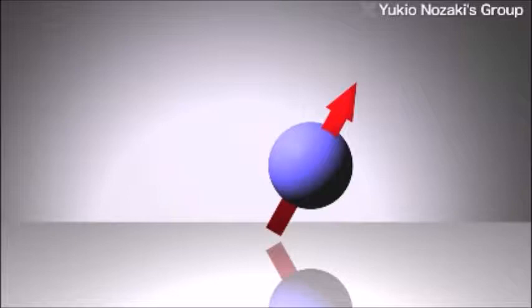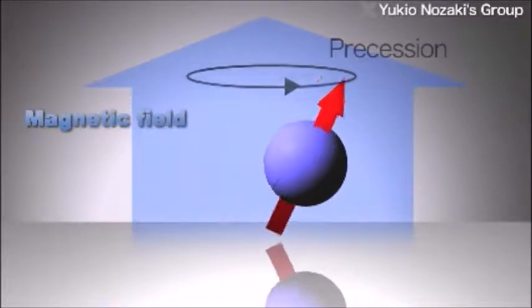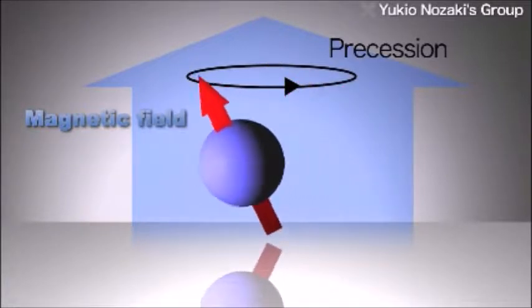Electron spin is one form of an electron's angular momentum. The direction of spin changes when an electron is placed in a magnetic field. It's a precessional motion, like that of a top in a gravitational field.